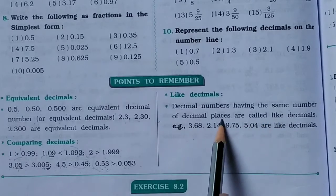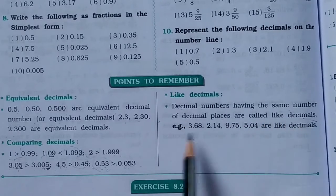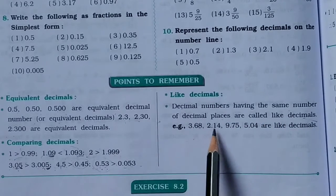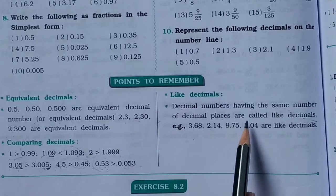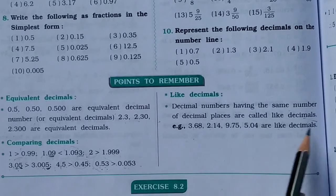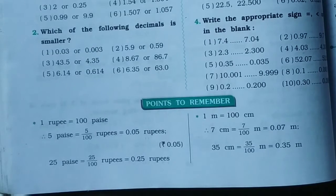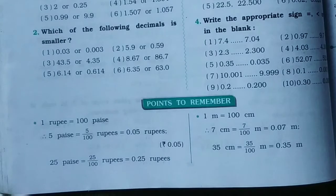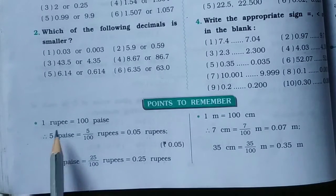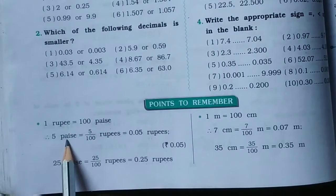Like decimals: decimal numbers having the same number of decimal places are called like decimals. Example: 3.68, 2.40, 9.75, and 5.04 are like decimals — all have two decimal places.